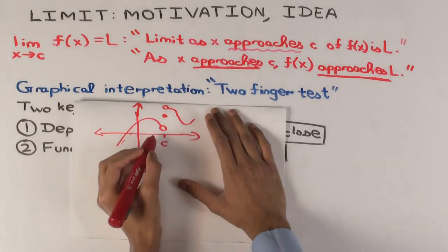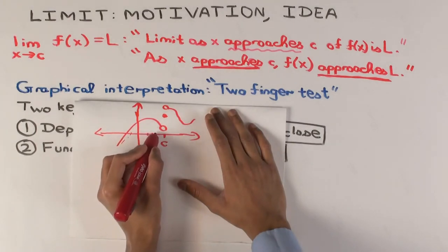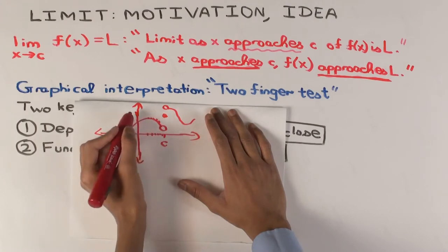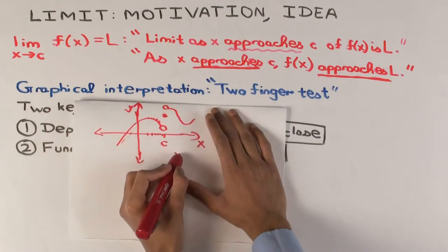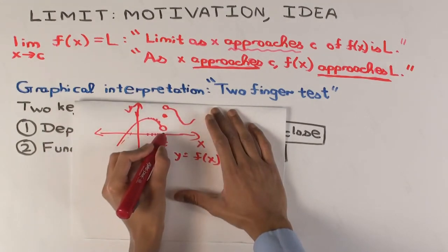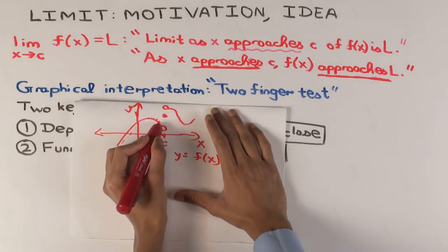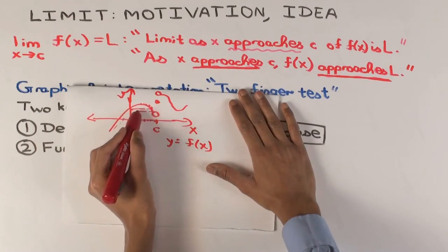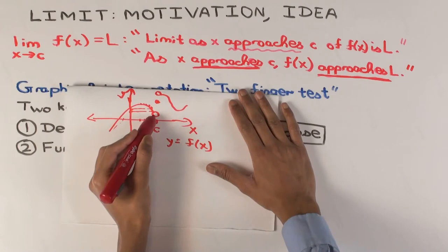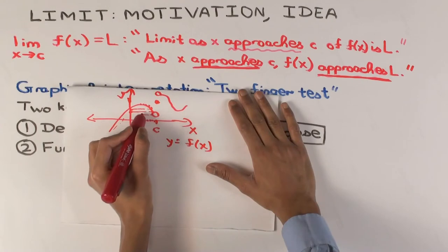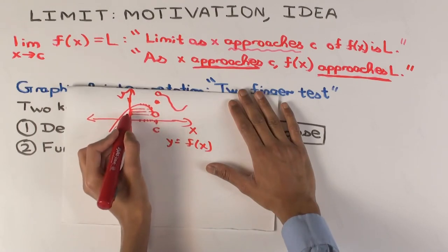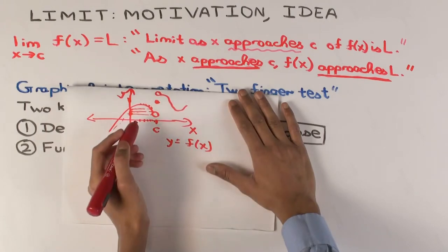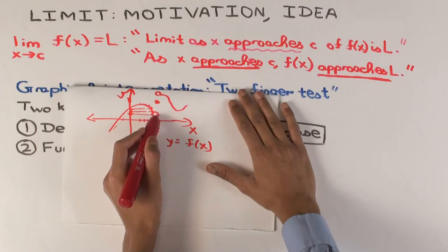As x is approaching c from the left — taking values of x slightly less than c — the function values are the y-coordinates of the points on the graph, since the graph is y equals f(x). So when x is to the immediate left of c, those y-values are approaching the y-coordinate of this open circle. In a sense, looking at the limit from the left, the left-hand limit would be the y-coordinate of this open circle.